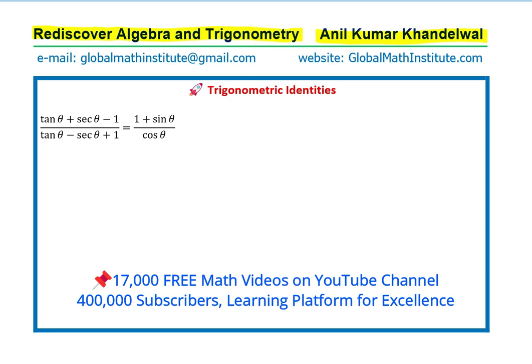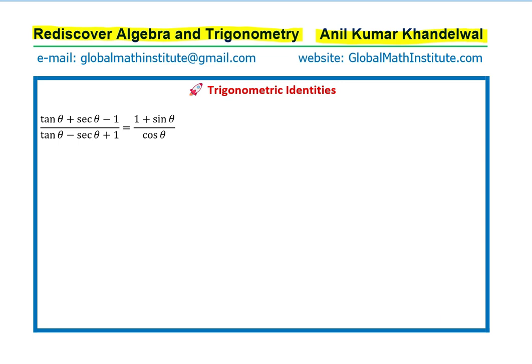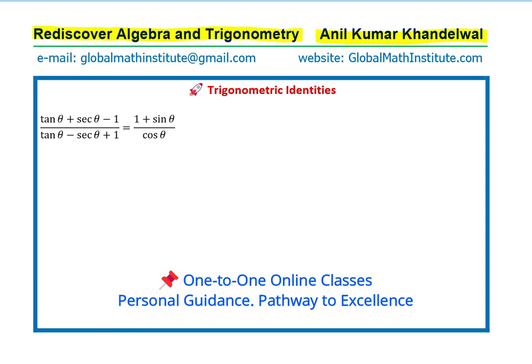We will take up this trigonometric identity: tan θ + sec θ - 1 over tan θ - sec θ + 1 equals 1 + sin θ over cos θ.